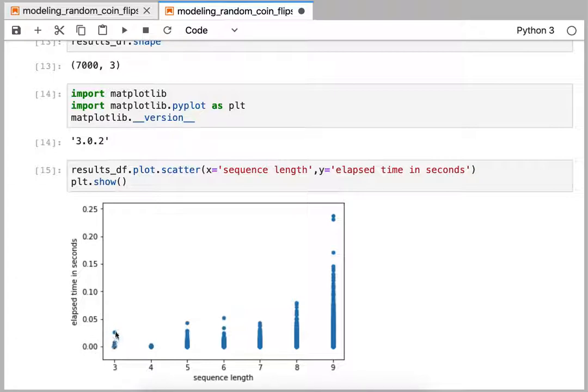So we can see a pretty short time, and it's not perfectly monotonically increasing, but overall we can see the number of, the amount of time it takes to find a match is increasing. The reason there's a whole bunch of points here is because we did this experiment a thousand times, and we did this experiment a thousand times, and we did this experiment a thousand times.